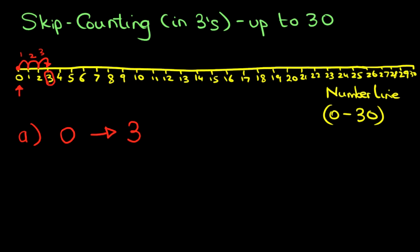We've gone from 0 to 3, and that is counting in threes. That is correct. Okay, it really is quite simple.